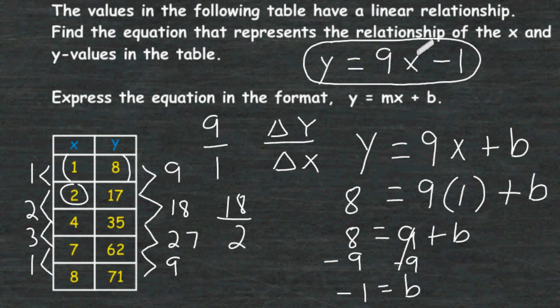If we plug 2 into the equation, 9 times 2 is 18, and 18 minus 1 is in fact 17. If we do the same for x equals 4, 4 times 9 is 36, and 36 minus 1 is in fact 35.